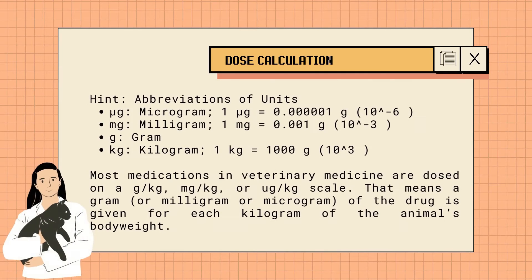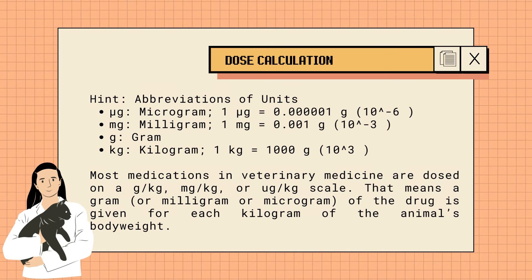For dose calculation, the following conversions are important: 1 microgram equals 0.000001 grams or 10 to the power of negative 6; 1 milligram equals 0.001 grams or 10 to the power of negative 3; and 1 kilogram equals 1000 grams or 10 to the power of 3. Most medications in veterinary medicine are dosed on a gram per kilogram, milligram per kilogram, or microgram per kilogram scale — meaning that amount of drug is given for each kilogram of the animal's body weight.